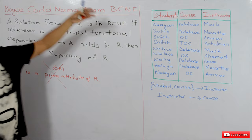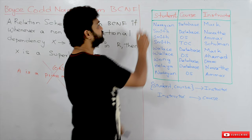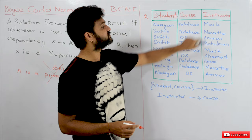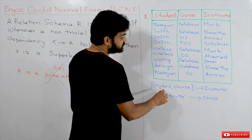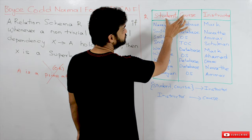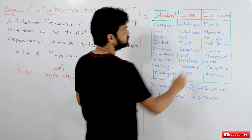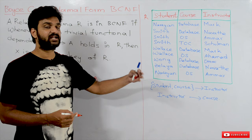Now we will understand this with an example. We have a relation R with three columns: Student, Course, and Instructor — a specific student taking a course, and the instructor of that course. The functional dependencies that hold on this relation R are: Student, Course determines Instructor, and Instructor determines Course.